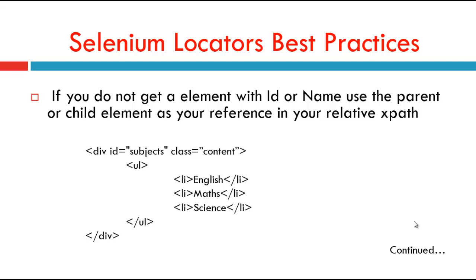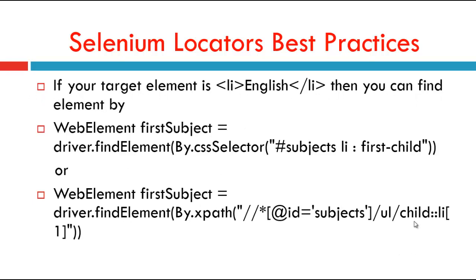If you want to identify 'English', use: WebElement firstSubject = driver.findElement(By.cssSelector('#subjects li:first-child')). Or using XPath: driver.findElement(By.xpath('//*[@id="subject"]/ul//child::li[1]')). That is the index. Like this, we use a child and parent relationship when there is no ID or name.